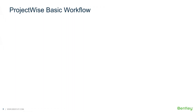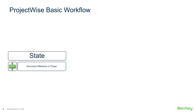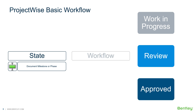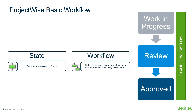Before we begin, let's review a basic workflow and recall the basic terms. A workflow state is a document milestone or phase, such as work in progress, review, or approved. A workflow is an ordered group of states through which a document passes on its way to completion.